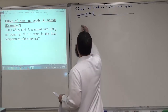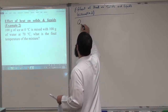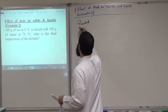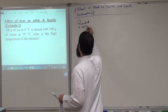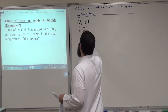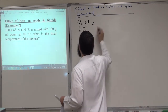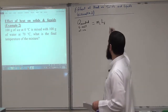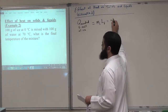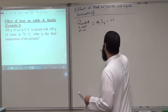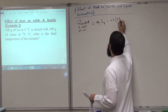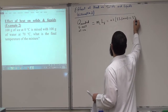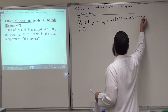How much heat is needed to melt all the ice? The heat needed to melt all ice equals the mass of ice multiplied by the latent heat of fusion. This is 0.1 kg multiplied by 333,000, which gives us 33,300 joules.